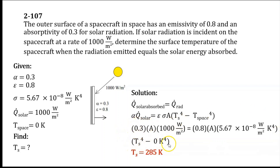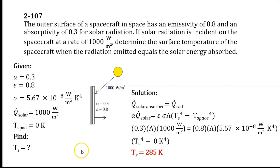Using the calculator with the shift-solve function, we can now find the surface temperature of the spacecraft when the radiation emitted equals the solar energy absorbed. The result is a surface temperature of 285 Kelvin.